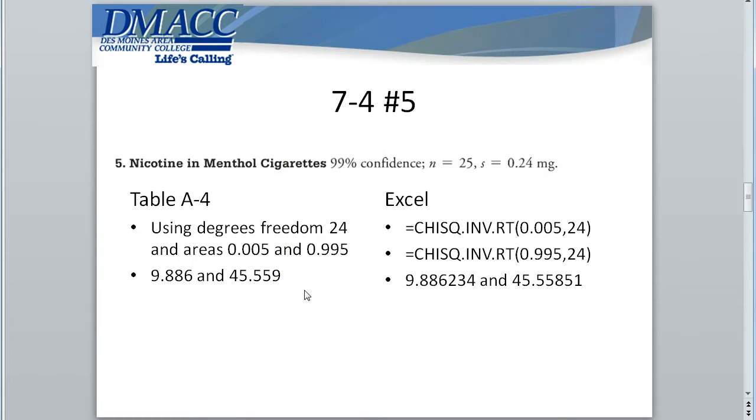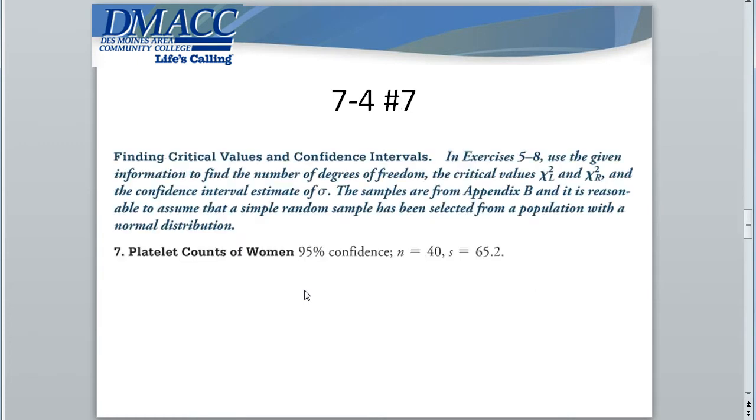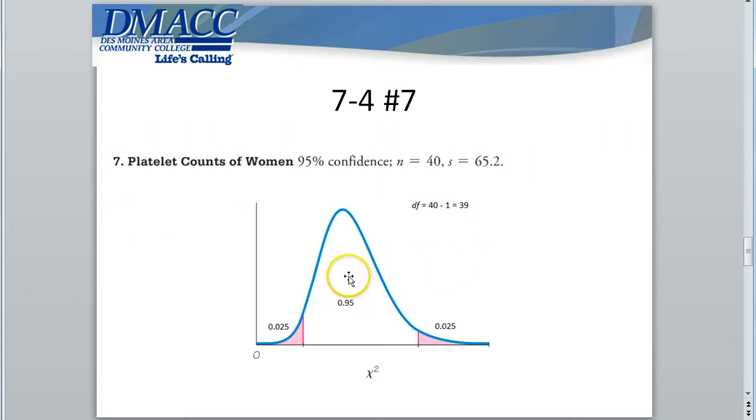But what happens if we don't have the same degrees freedom on the table? Let's look at problem number seven now, where you're asked to find a confidence interval estimate for the platelet counts of women. For the standard deviation, we're asked to find a confidence interval estimate of the standard deviation. We want to be 95% confident with a sample size of 40 that gives us a sample standard deviation of 65.2. Now, in this case, here's a chi-squared distribution with degrees freedom 39. The middle 95% is represented, which leaves 5% for the two tails on the left and right. 5%, half of which has to be in the right tail, so 2.5%, and half of which has to be on the left tail, so 2.5%. So you can see, for the right critical value that's going to give me an area of 2.5% towards the right, the left chi-squared value is going to have an area to the right of 95 and another 2.5%, which will give me 97.5%.